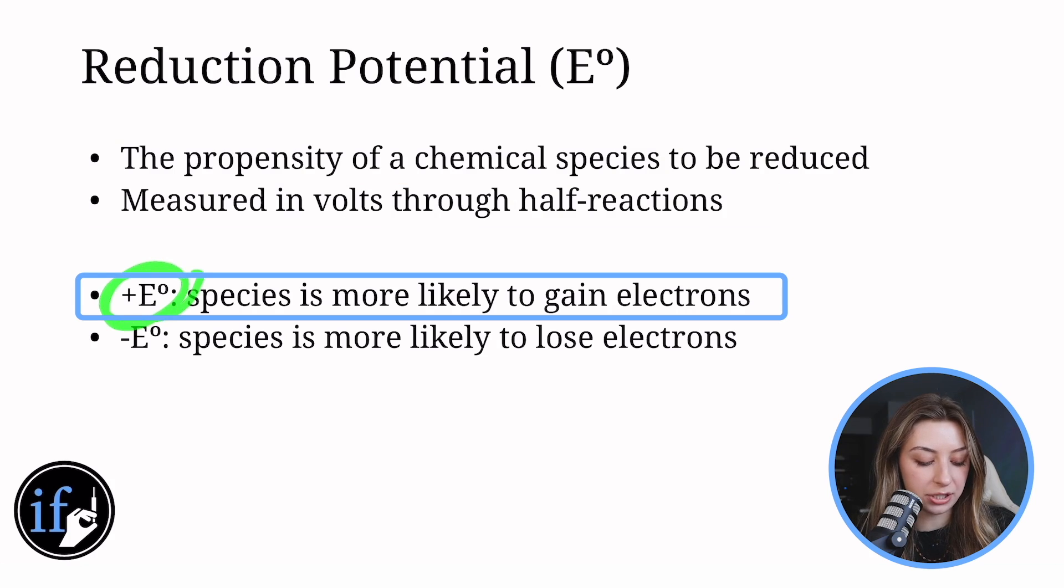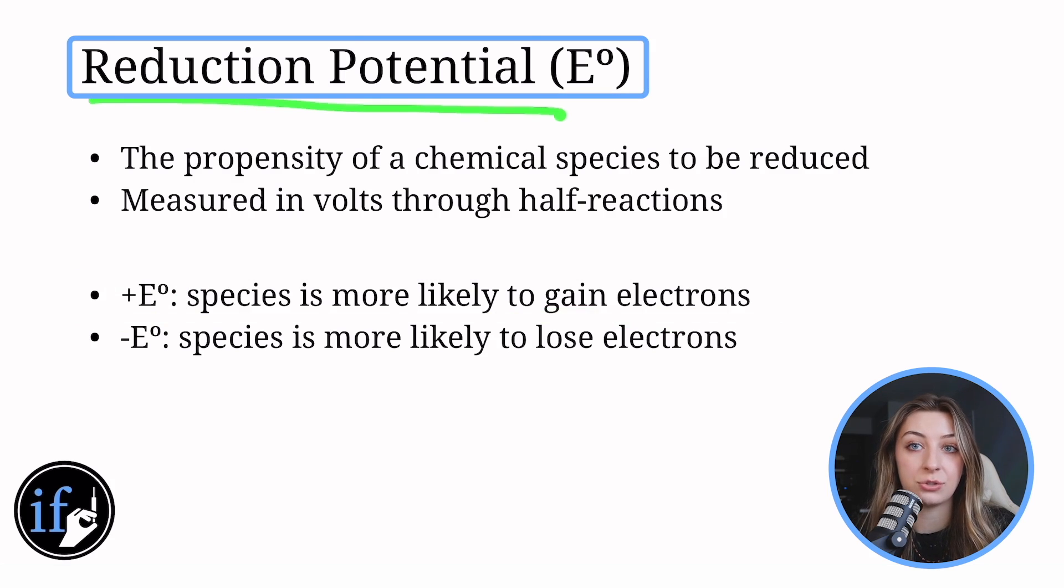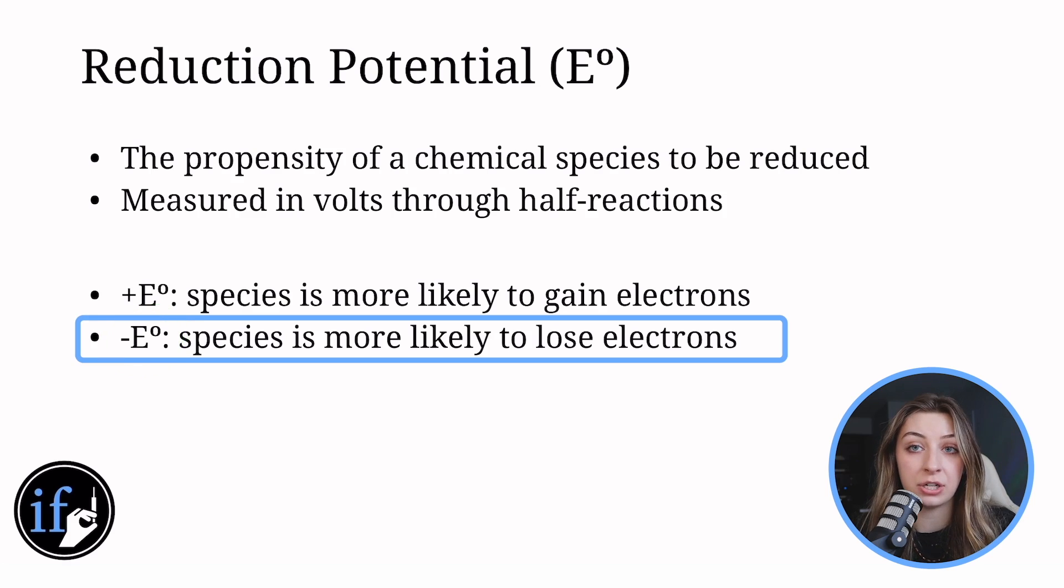So if you have a positive reduction potential, that means it's more likely to gain electrons. It wants to be reduced and that makes sense because this is the reduction potential. If it is negative that means it wants to go in reverse. It does not want to gain electrons. It wants to lose electrons. It wants to get oxidized.